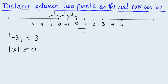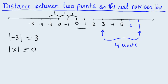Let's figure out the rule. Say I want to find the distance between 3 and 7. I can count the units — it's 1, 2, 3, 4 units. So this distance is 4 units. What about the distance between negative 3 and 2? Let's count: 1 unit, 2 units, 3 units, 4 units, and 5 units. So this distance is 5 units.